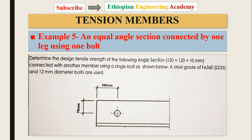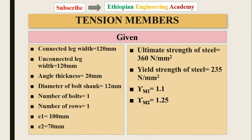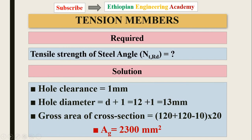The given data: the connected leg is 120 millimeters, the unconnected leg is 120 millimeters, the angle thickness, diameter of the bolt, number of bolts, number of rows, eccentricity e1 = 100 millimeters, e2 = 700 millimeters, ultimate strength, yield strength, and partial safety factors are provided. The required result is the tensile strength of the steel angle section.